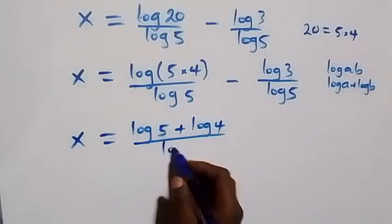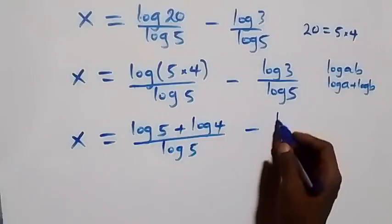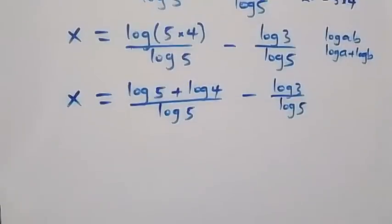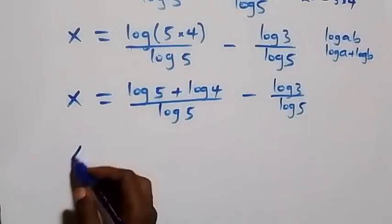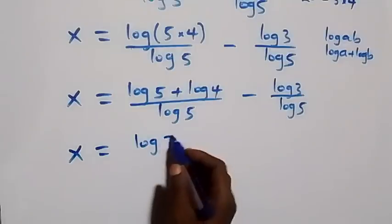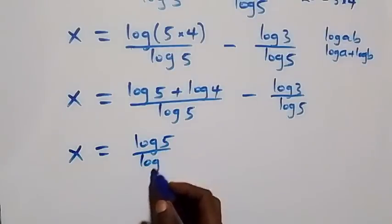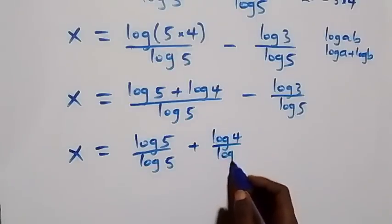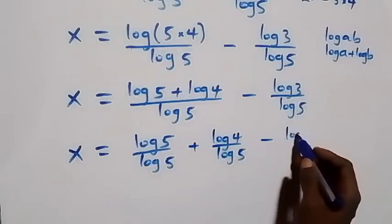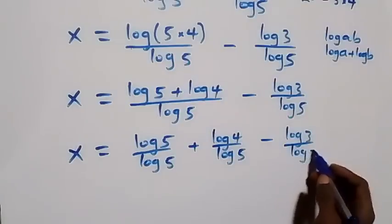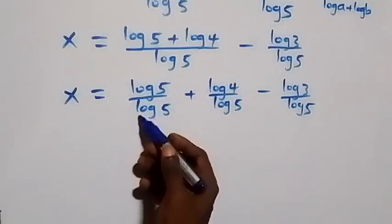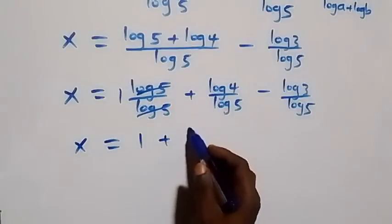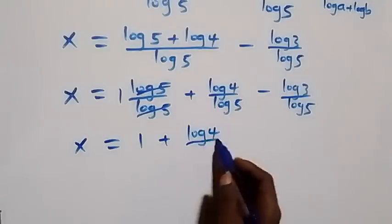We separate this fraction into two fractions and have x equals to log 5 over log 5, plus log 4 over log 5, minus log 3 over log 5. Log 5 over log 5 cancels to give one, so this becomes x equals to 1 plus log 4 over log 5 minus log 3 over log 5.